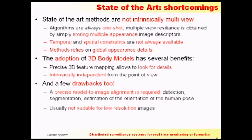These state-of-the-art algorithms usually have lots of drawbacks and shortcomings. They usually work on single images only, so they treat different views of a person independently. Some even need both spatial and temporal constraints — you need to know the topology of a camera network, where the cameras are. So my idea was: why not try to use 3D body models instead of 2D body models in order to do re-identification?